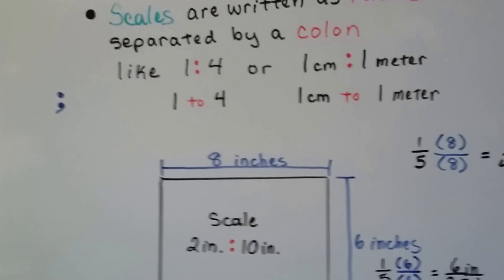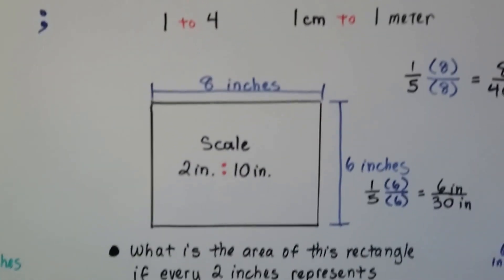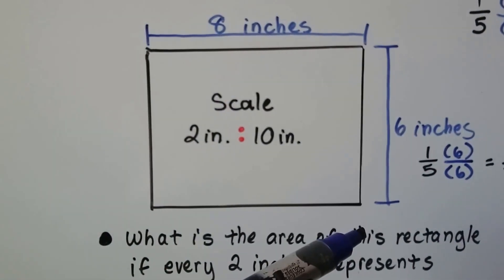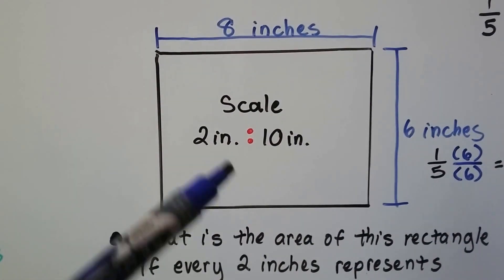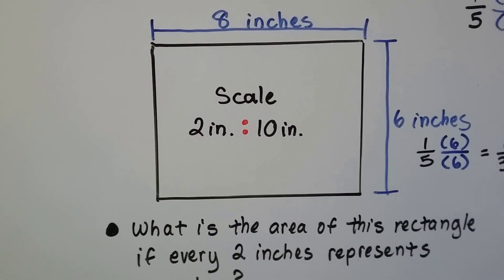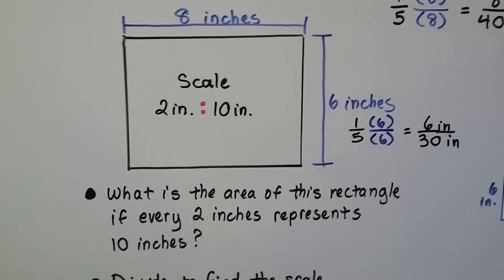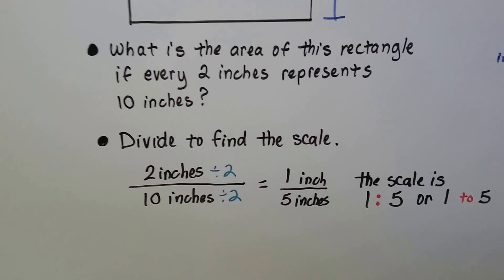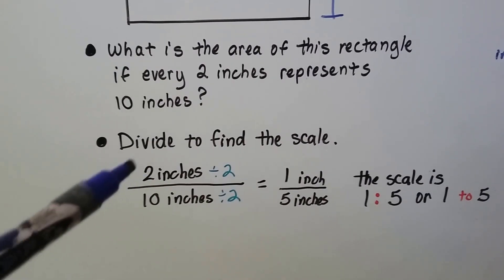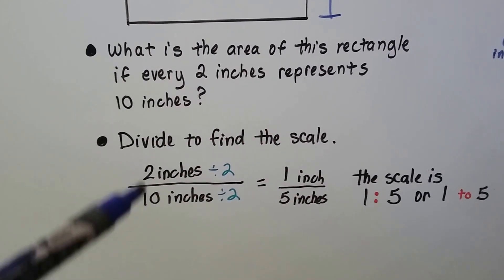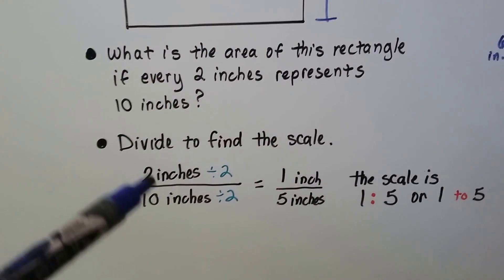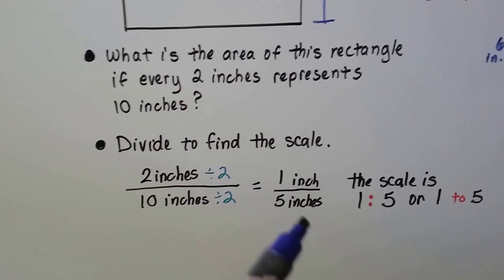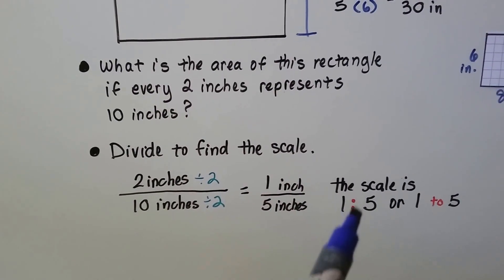So here we've got this scale drawing. It says this rectangle is 8 inches this way and 6 inches this way and the scale is 2 inches to 10 inches. So what's the area of this rectangle if every 2 inches represents 10 inches? Well, we're going to divide to find the scale. We're going to write the 2 inches over the 10 inches. And this, as a fraction, can be simplified. We can reduce this. We divide both of them by 2 and we get 1 inch over 5 inches. So the scale is 1 to 5.